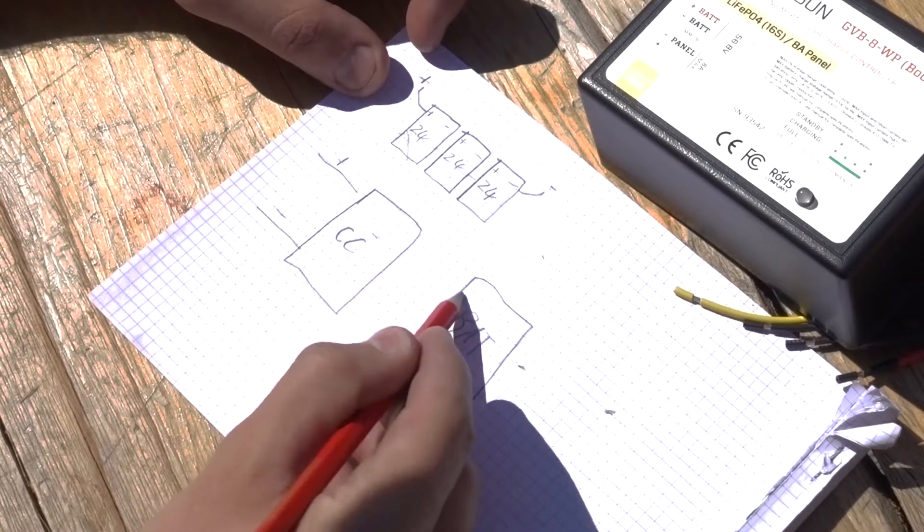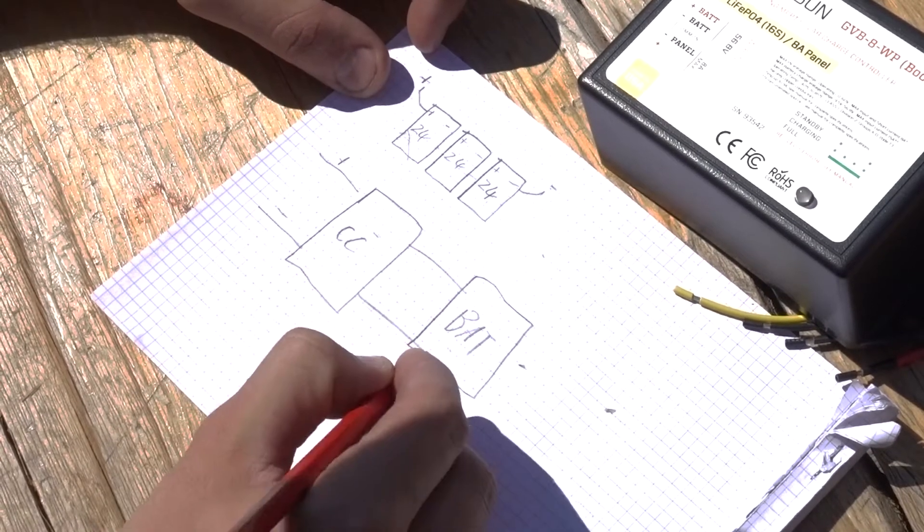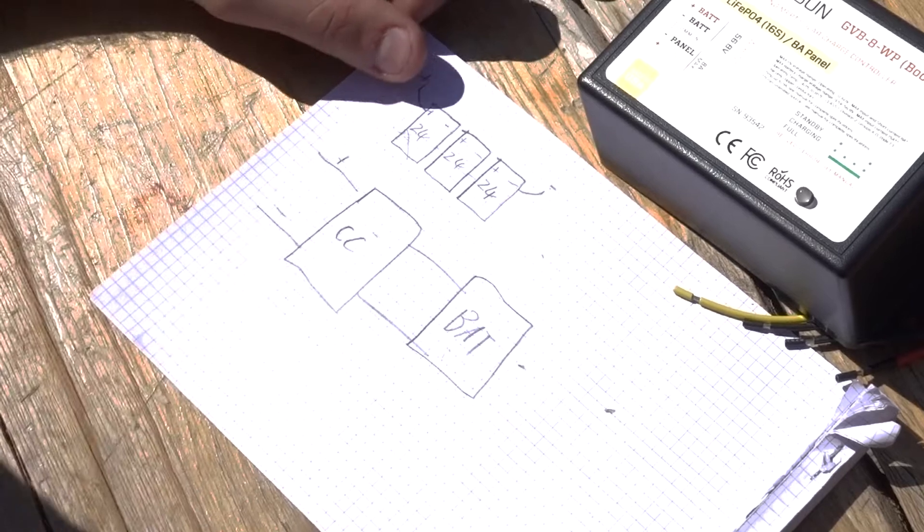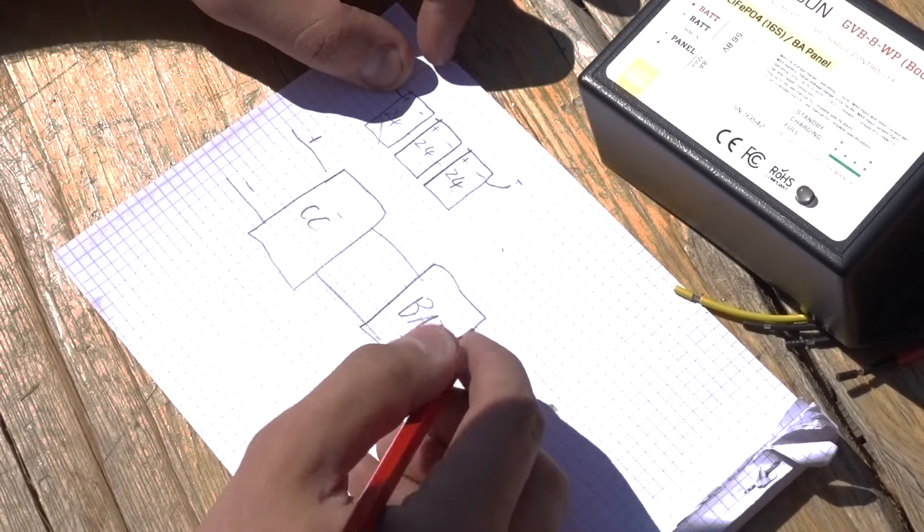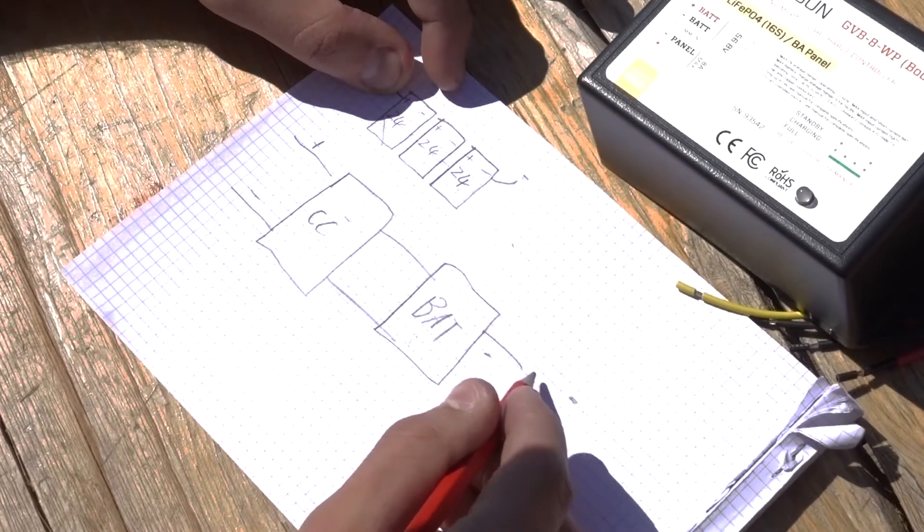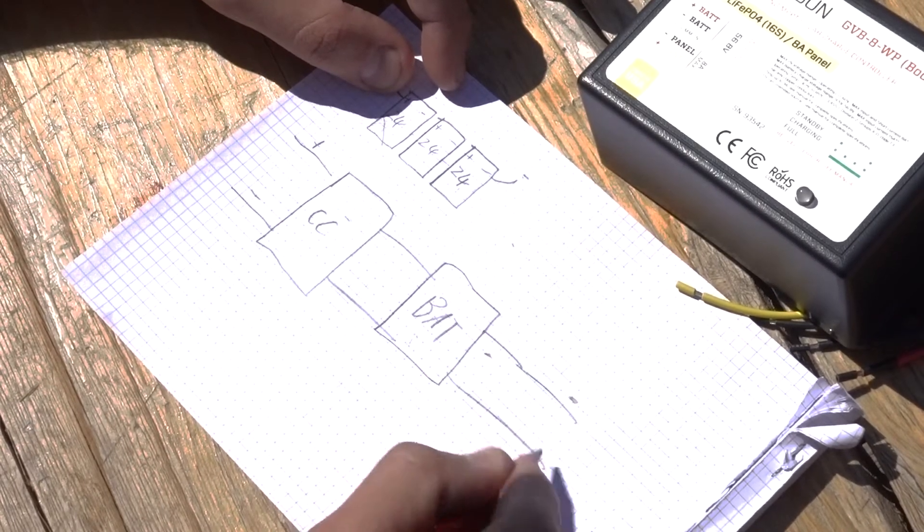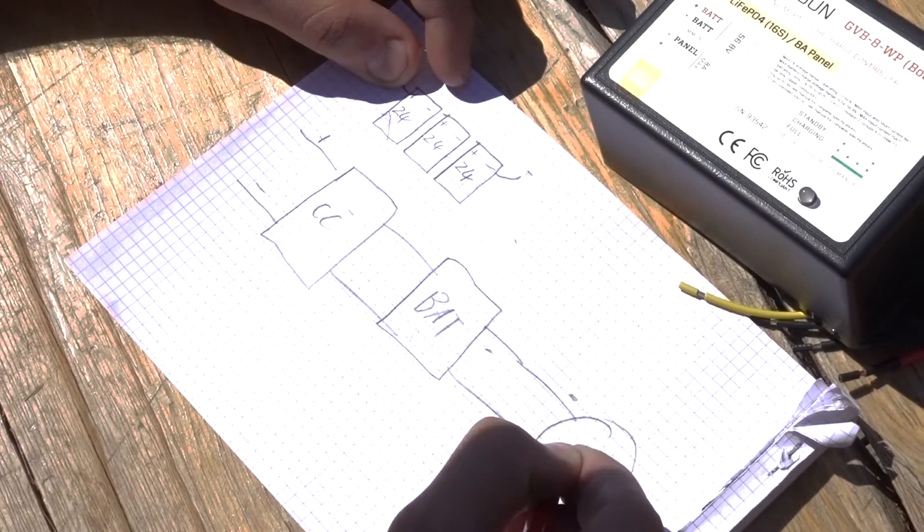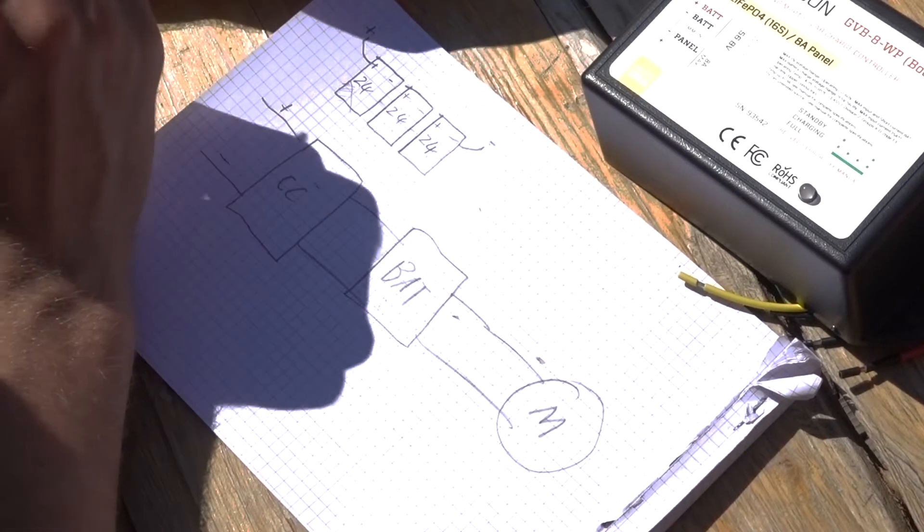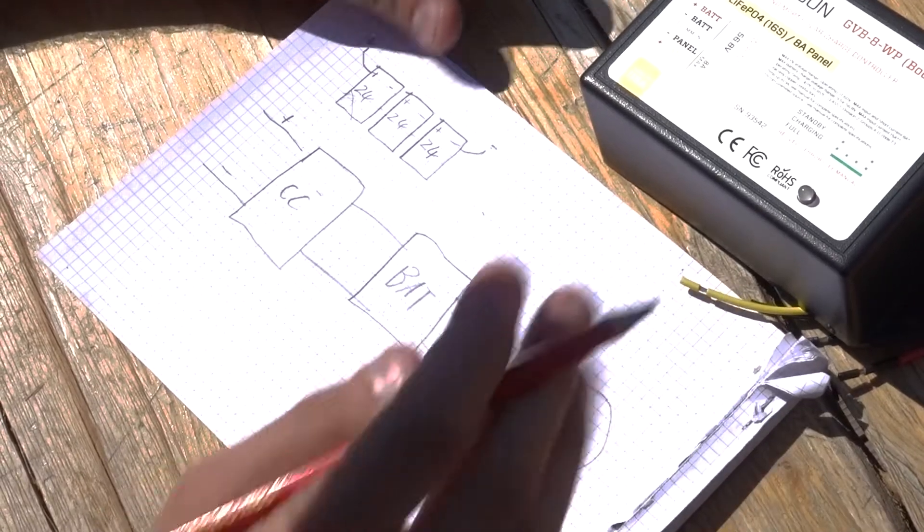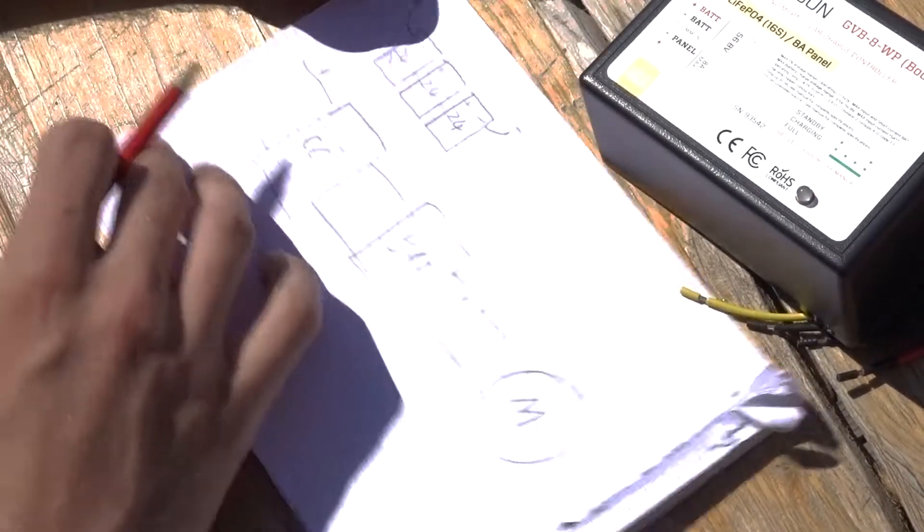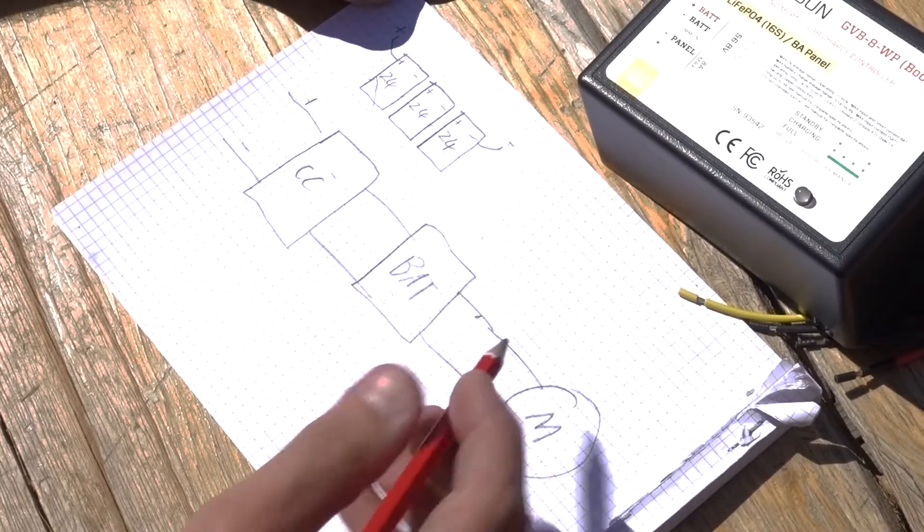This goes to the battery. And then we have a solar powered battery. From the battery, of course, we're going to go to the motor. This is the motor. And really, it's kind of as simple as that. Obviously, we've got a controller for the motor and things, but if you really simplify it, this is exactly what it is.